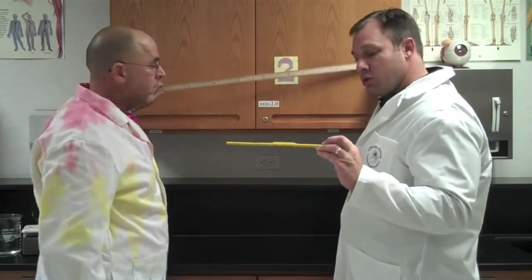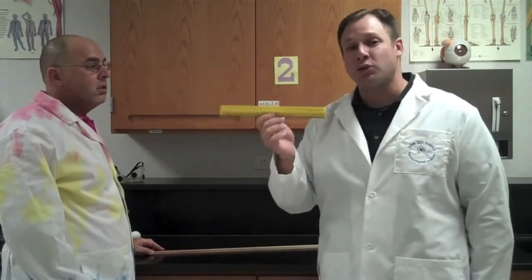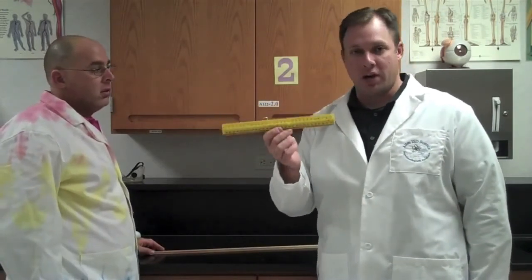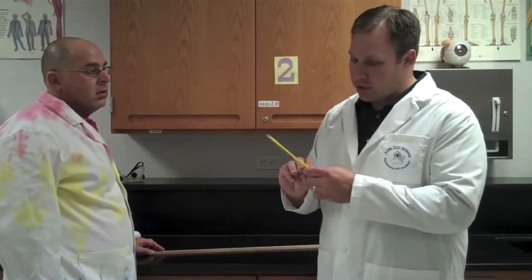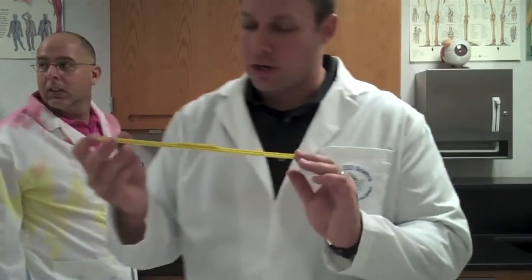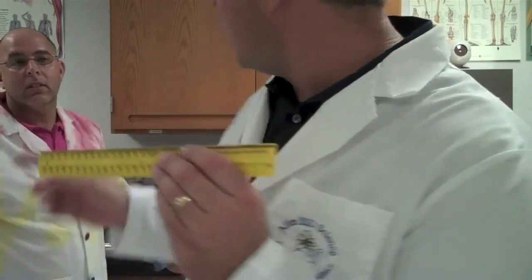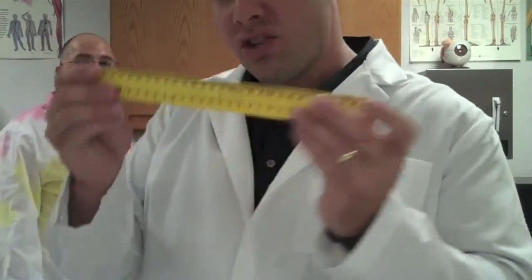And then we can also use this right here. This is a ruler, but this is a metric ruler. This is not a standard inches ruler. In a standard inches ruler, you might have 12 inches. This is a metric ruler. It has 30 centimeters. You can see that there are no inches, there are no fractions. It is all centimeters, and the little bitty lines right here would be millimeters. So this is the same thing as the meter stick, it's just a smaller version.